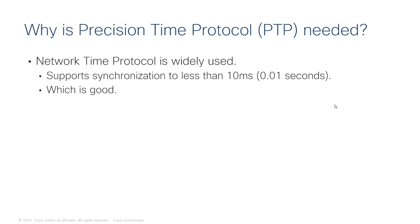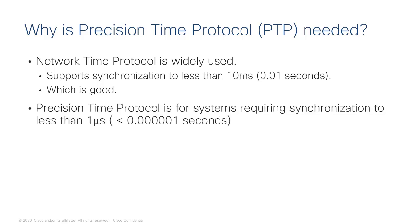Why do we even need Precision Time Protocol? We have another protocol called Network Time Protocol or NTP and it's very widely used. Almost all consumer devices use it — your laptops, your iPhones. The synchronization is to within 10 milliseconds according to the standard, and that's really good. For human beings, 10 milliseconds is enough. But there are other systems out there that need something more precise. We call them deterministic systems, and for these they need less than one microsecond of precision. We're talking nanosecond levels of precision.